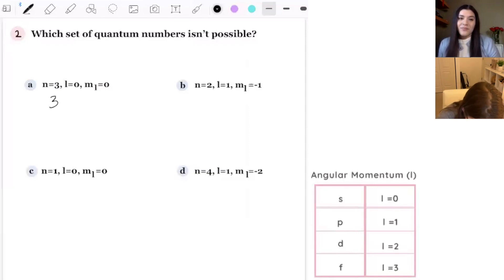So 3, and then we know that our l is equal to 0, so it's s. Okay. I remember now. Is that possible? Yes. So, okay. Perfect. That's done. After that, after we see that, okay, that's valid, then I'm going to look at the m sub l and see if that's possible.